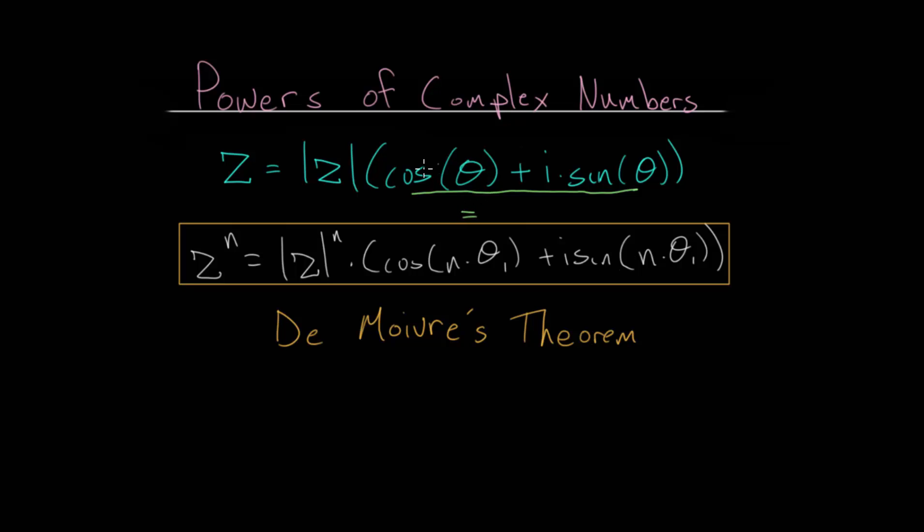And this expression, the cosine of theta plus i times the sine of theta, is equal to e to the i times theta. So we can rewrite this number in its exponential form as the magnitude of the complex number multiplied by e to the i times theta.